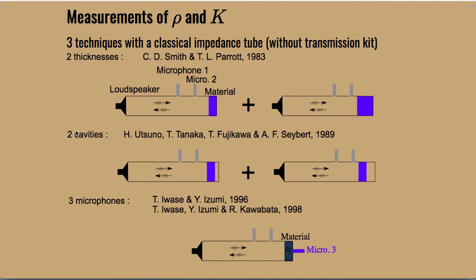Another technique uses two cavities, introduced by Utsuno, Tanaka, Fujikawa, and Seybert. You measure the surface impedance for one material sample with an air gap behind it, then repeat for the same material sample but with a different air gap. From these two measurements you can obtain Rho and K.